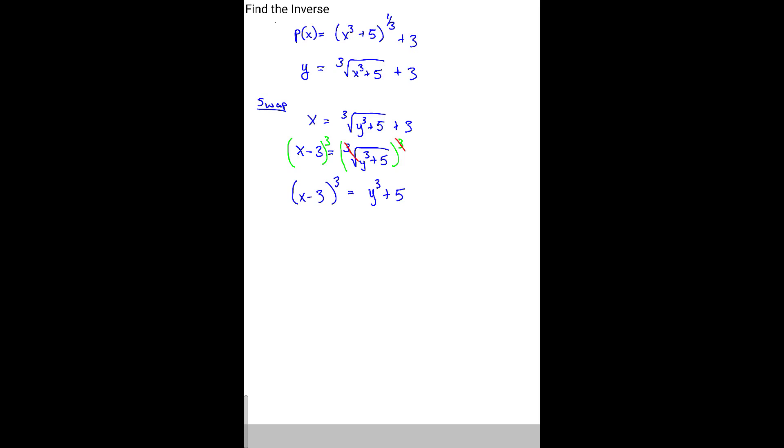Now, to get the y to the third by itself, we've got to subtract 5 on both sides. So we have x minus 3 to the third power minus 5 equals y to the third.